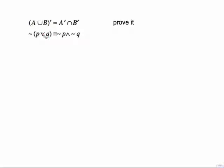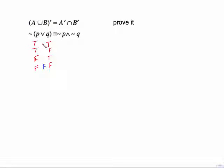There's another version: the negation of an OR statement becomes not P AND not Q. We prove it the same way. P is T, T, F, F. Q is T, F, T, F. For OR, the only time it is false is if both simple statements are false, so the rest are true. But we need to negate that, so this column becomes false, false, false, true.